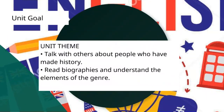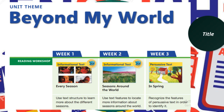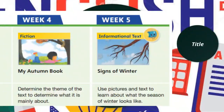The unit goal is: we will talk with others about people who have made history, and we will read biographies and understand the elements of the genre. Volume five has the unit theme 'Beyond My World.' We will be introduced to informational and persuasive texts, reading about different seasons. In 'Every Season' we will use text structure, and in 'Seasons Around the World' we will use text features to locate information. In 'Spring' we will recognize the features of persuasive text.